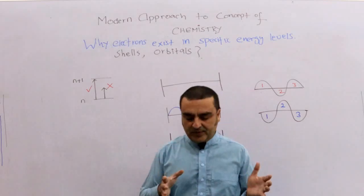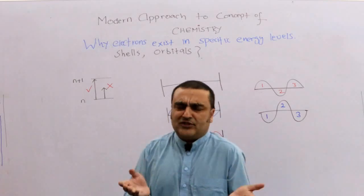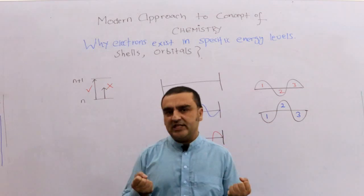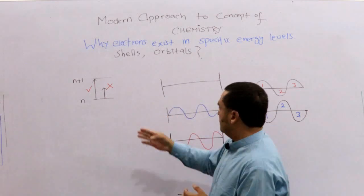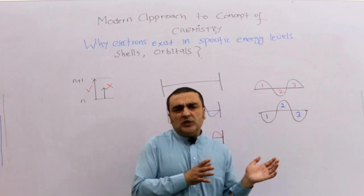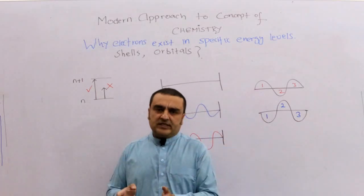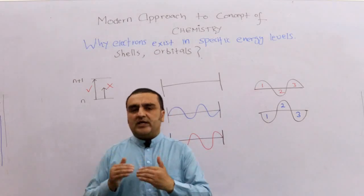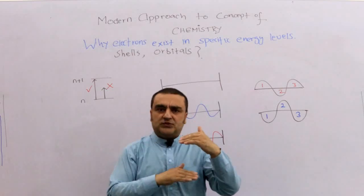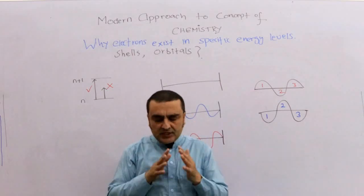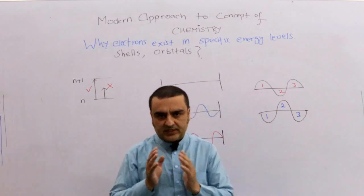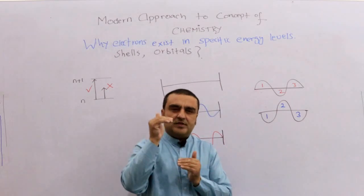At that excited orbital, the electron overlaps weakly with itself for a short time — the interference is very weak. After some time, the interference disappears and the electron returns to its stable state. At the stable ground state, the interference is very strong and perpetual — it's like a very solid place where the electron can stand. This is also why the electron doesn't fall into the nucleus.